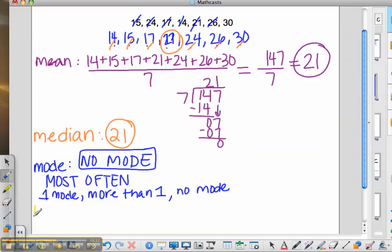The range is the greatest value—in this case 30—minus the smallest value, which in this case is 14. So the range is 30 minus 14, which is 16.